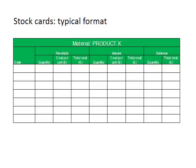On the screen at the moment we have an example of a stock card. This is a document that organisations use in order to record levels of stock that it receives, issues and holds at any given time. On the left hand side we have a column recording the date of different transactions, whether they're purchases or issues of stock. To the right of the date column we have three columns where we record materials that have been purchased: the quantity bought, the cost per unit, and the total cost — which is simply the quantity multiplied by the cost per unit.